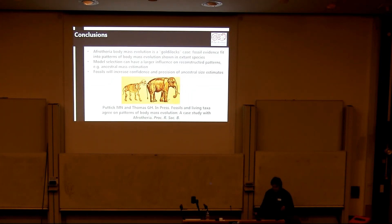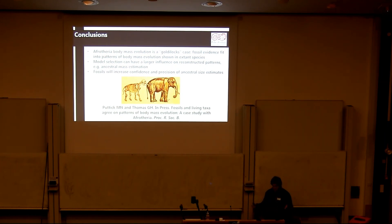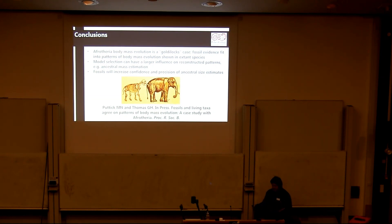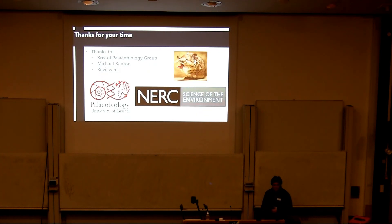In conclusion, Afrotheria body mass is a Goldilocks case where fossils fit perfectly into what we know from living taxa. Model selection, rather than the inclusion or exclusion of fossils, can actually have a larger influence on our reconstruction of evolutionary patterns. Having said that, fossils will always increase our confidence and precision in these types of analyses. Thank you very much.